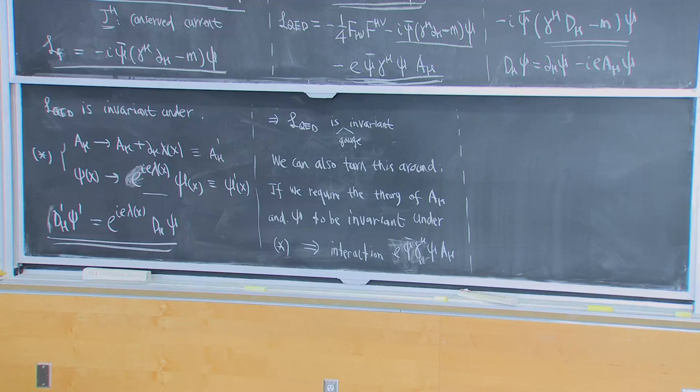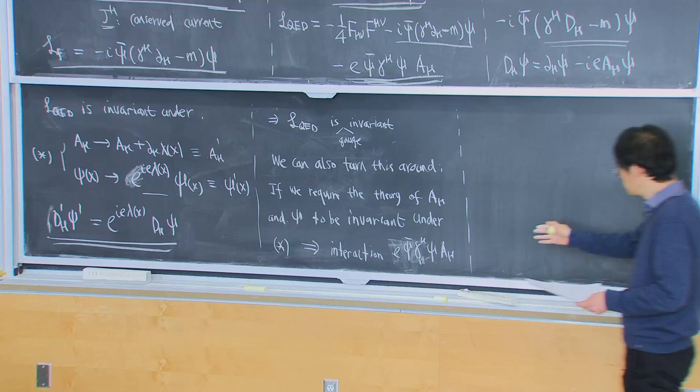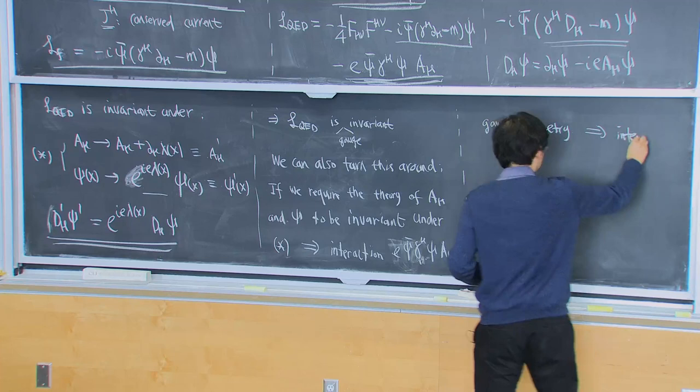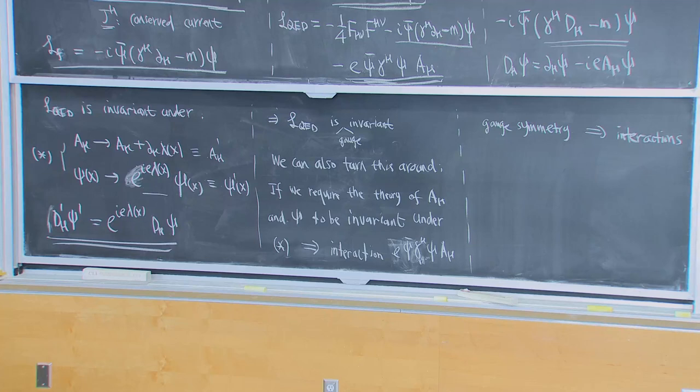Even though this is just a rephrasing of what we did, this rephrasing is actually powerful. It means that when we impose this gauge symmetry, we can actually deduce the interactions — we can fix the interactions by requiring certain kinds of symmetries.